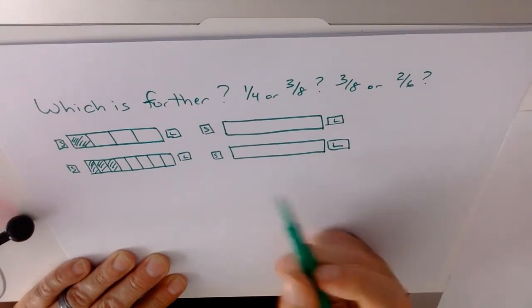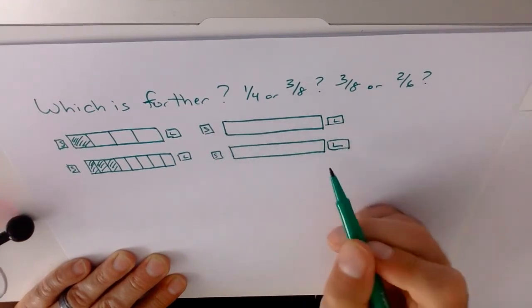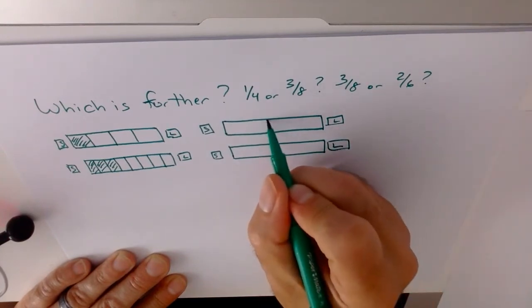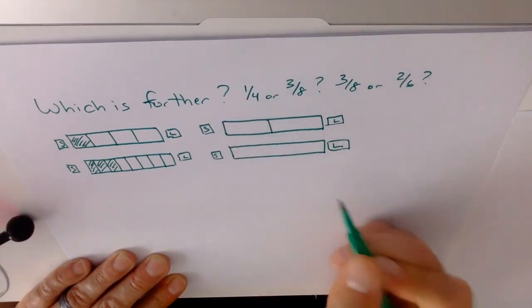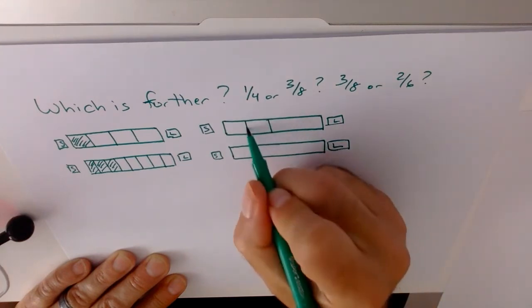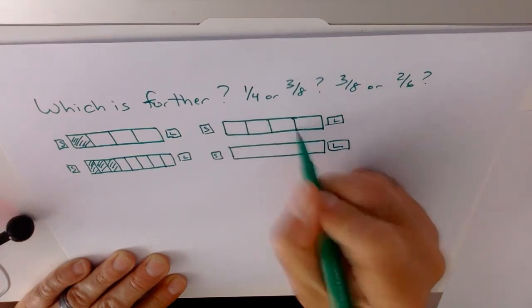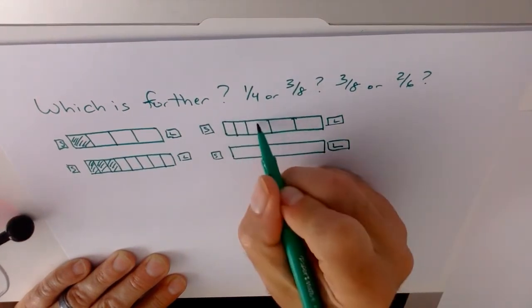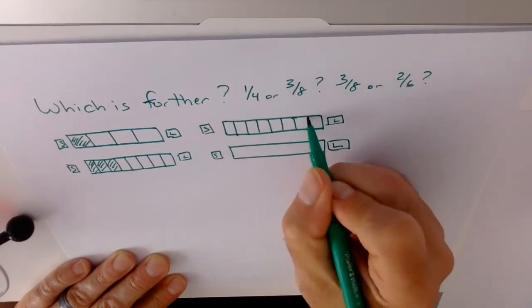And instead of trying to get our eighths and our sixths by going from left to right, for the eighths we divide it in the middle, then divide in the middle again, and divide in the middle 1, 2, 3, 4.